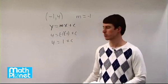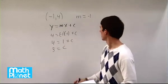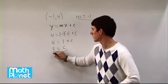So we just need to subtract 1 from both sides. 3 equals c. So we've done it then. We have our m, we have our c, we have our equation.